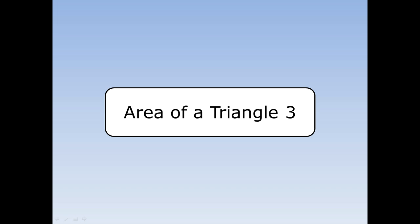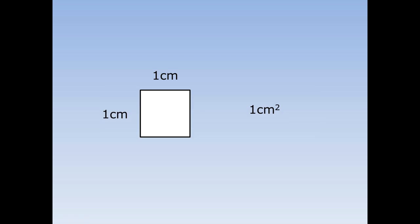Area of a Triangle. Area is the space inside a shape. We measure it using centimetres squared. One centimetre squared is a square that's one centimetre by one centimetre.